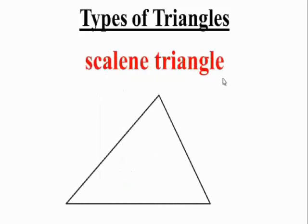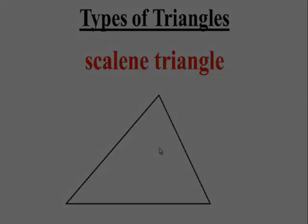A triangle that has no equal angles or no equal sides is called a scalene triangle. And this is what a scalene triangle looks like.